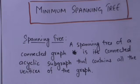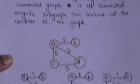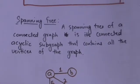Hello friends, welcome back. In this tutorial we will study about minimum spanning tree of a graph, but first we must know what is the spanning tree of a graph. A spanning tree of a connected graph is its connected acyclic subgraph that contains all the vertices of the graph. In other words, a spanning tree is a subgraph which is a tree and contains all the vertices of the graph.